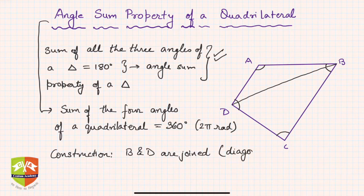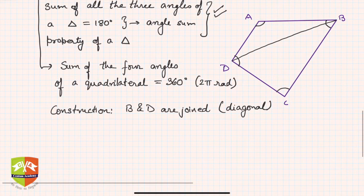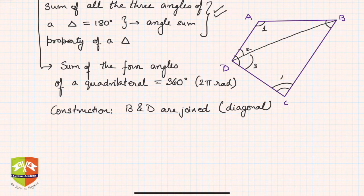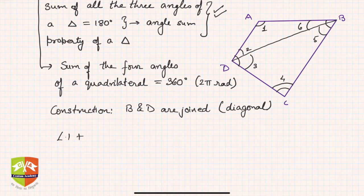BD is a diagonal. You could also join AC — the proof remains the same. Now for ease of writing, let us name the angles: let this angle be 1, this one 2, this one 3, this one 4, this one 5, and this one 6.